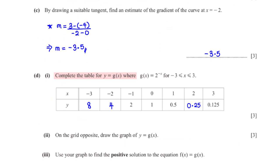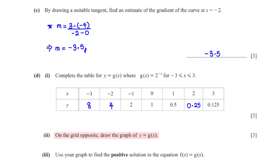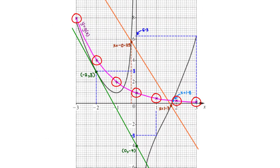Complete the table for y = g(x), where g(x) = 2 raised to the power negative x, for x between negative 3 and 3. For x = negative 3, y = 8; for x = negative 2, y = 4; for x = 2, y = 0.25. On the grid, we plot all the points from the table and connect them with a smooth curve.